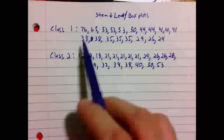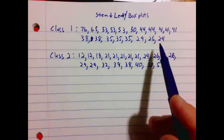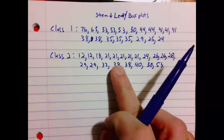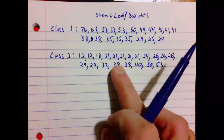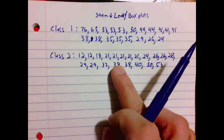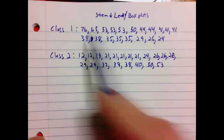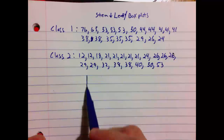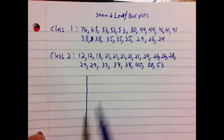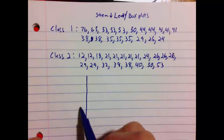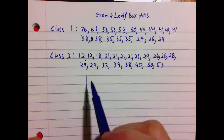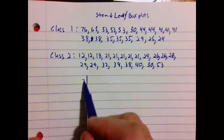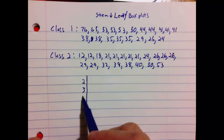I have my data organized in descending order. You can put it in ascending or descending order — typically we talk about ascending, but it really doesn't matter. Having it in order will help for constructing both of these plots, particularly a box plot. I noticed that my maximum is 76 and my minimum is 24, so I'll need stems that will capture those.